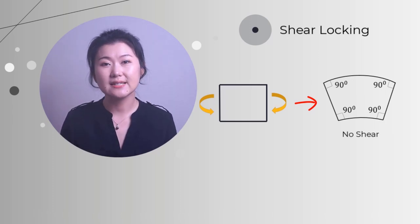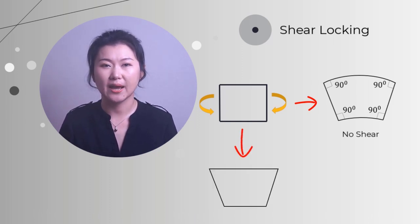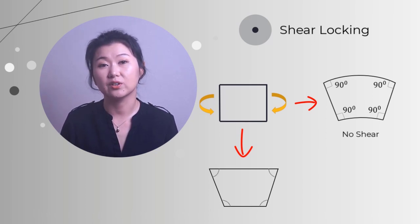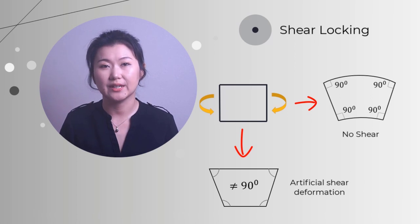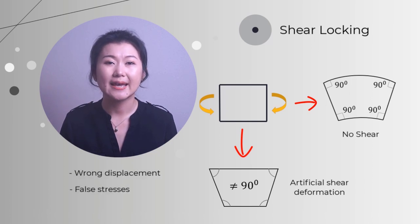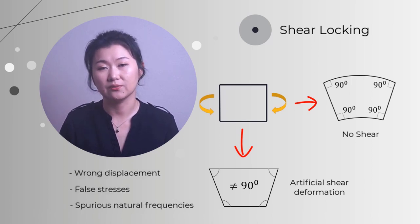However, since it's a linear element, the edges of the element cannot represent curvature. So the element can only deform to this pattern, where the horizontal lines remain straight, and the angles between the horizontal and vertical lines are not equal to 90 degrees anymore. This means artificial shear deformation is generated, and we call this shear locking. Shear locking leads to wrong displacement, false stresses, and spurious natural frequencies of the structure.